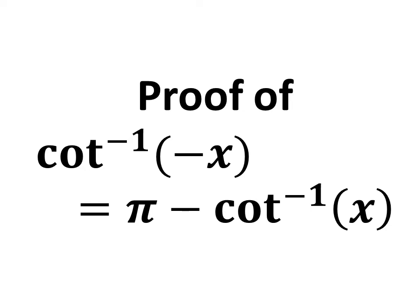In this video, we will learn how to prove the trigonometry identity: inverse of cotangent of minus x is equal to pi minus inverse of cotangent of x.